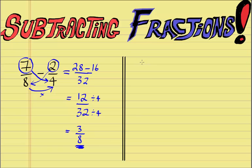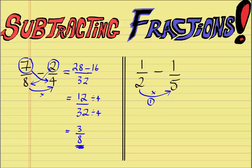Let's take a look at a second subtraction example. Say if we had 1/2 take away 1/5. Same rules apply. We first multiply out the denominators — that's the first step. So 2 times 5 equals 10. We write that in the denominator's position. We then go ahead and multiply the numerator of the first fraction — this is the second step. So 1 times 5 is 5. It's important that we keep this order.